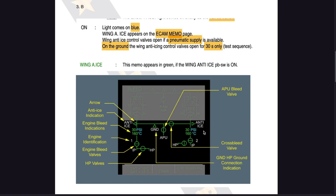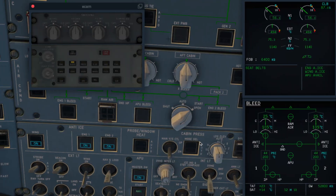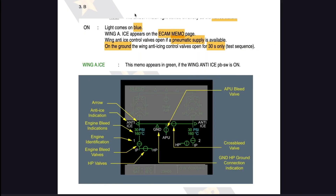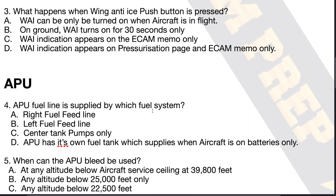So those are the indications for anti-ice. Let's move on to the next question: the APU fuel line is supplied by which fuel system? Option A is right fuel feed line, option B is left fuel feed line, option C is center tank pumps only, and option D is APU has its own fuel tank which supplies when the aircraft is on batteries only. Pause the video and try to answer this question.